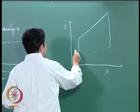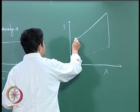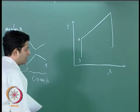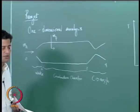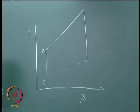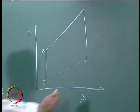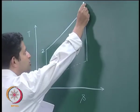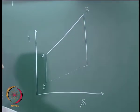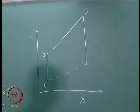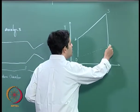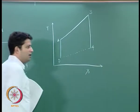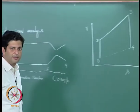On the T-s diagram: point 0 to 2 is isentropic compression — we are assuming ideal processes here. 2 to 3 is heat addition in the combustion chamber, and 3 to 4 is expansion through the nozzle.